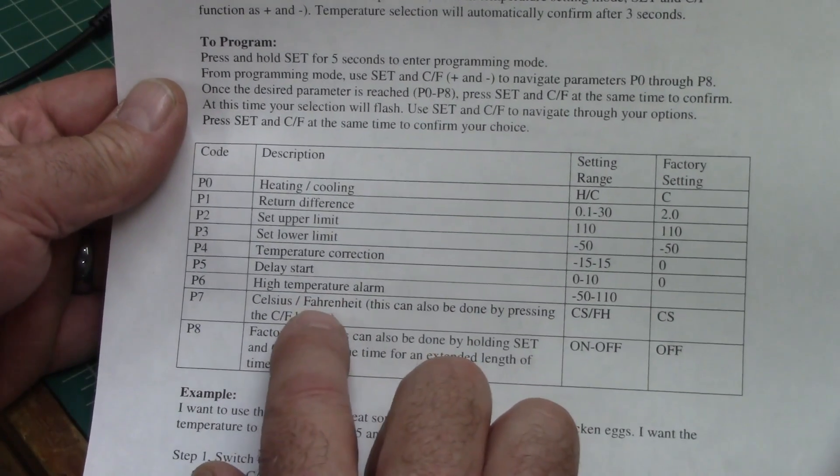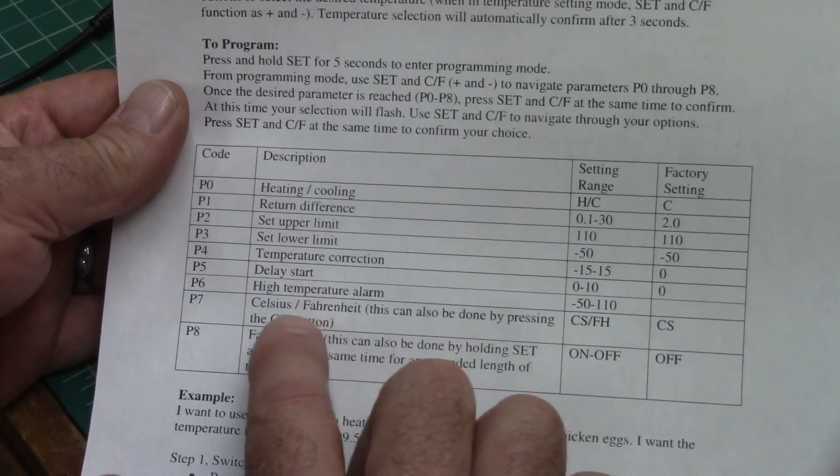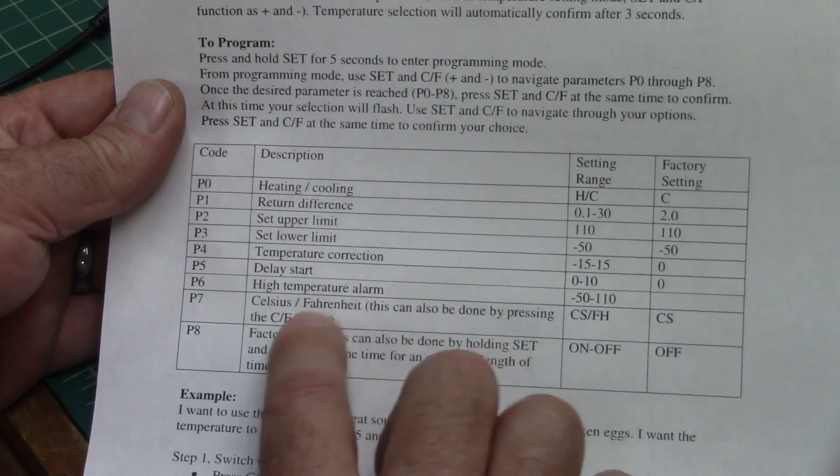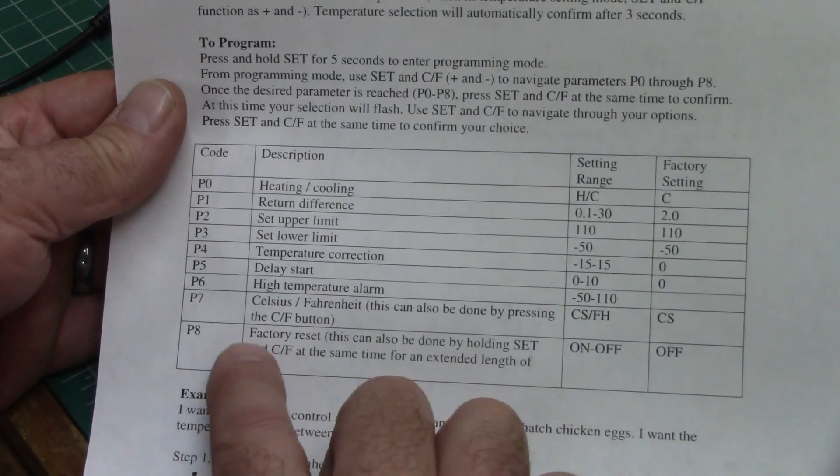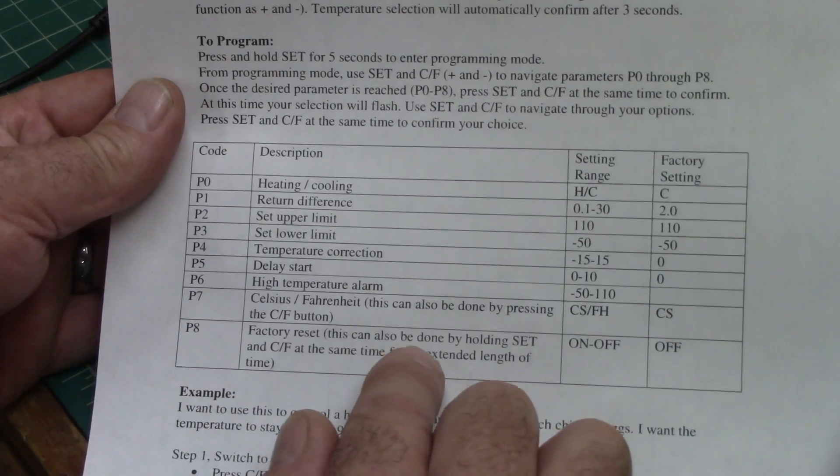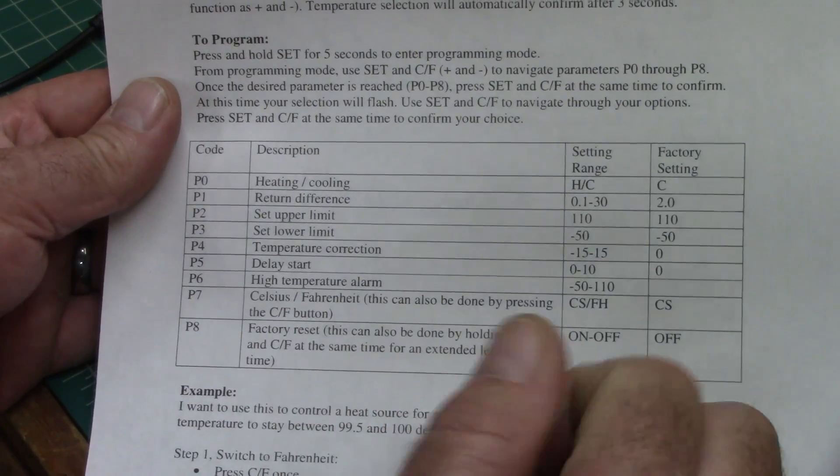And then the Celsius and Fahrenheit, you can do by the front button, but you can also set it here. And then P8 is a factory reset that just resets it back to its factory settings.